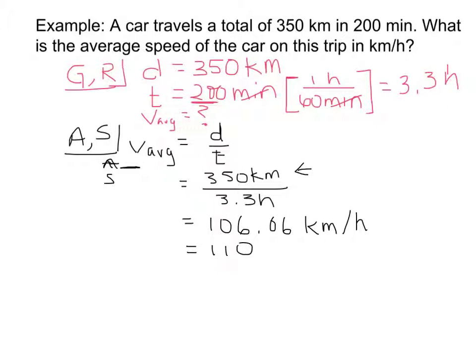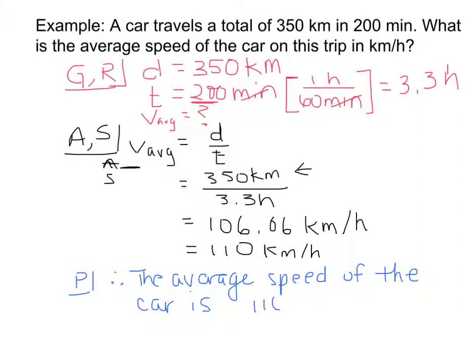So I'm going to get 110 kilometers per hour is the average speed. So now I just have to do my paraphrase. So therefore, the average speed of the car is 110 kilometers per hour. And that's the grasp method.